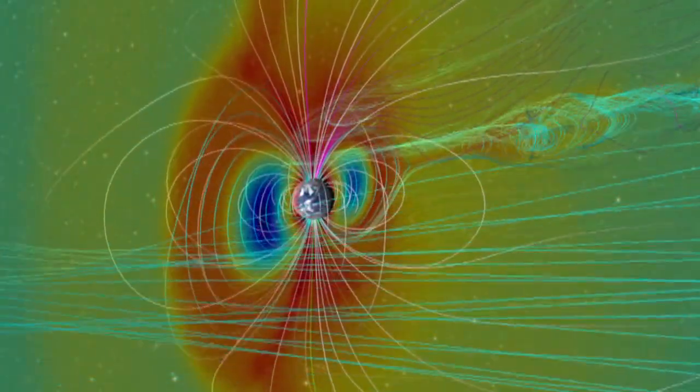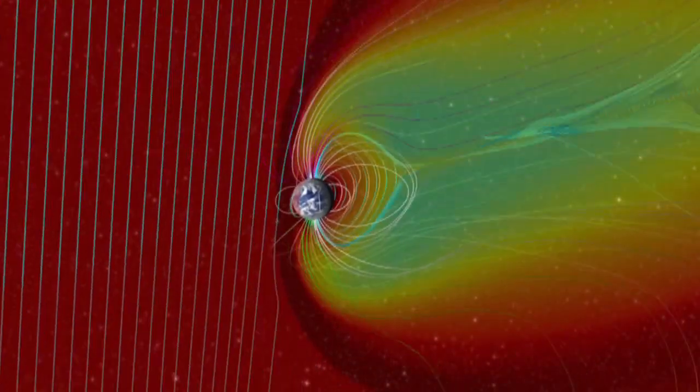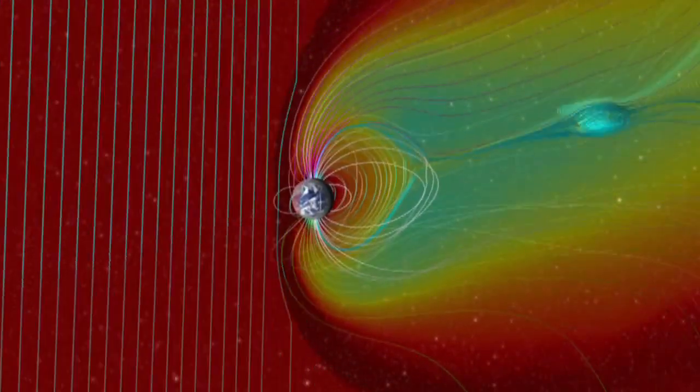The front of the magnetopause is pushed much closer to the Earth than usual. Even the field and plasma trailing behind the Earth are more strongly distorted.